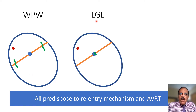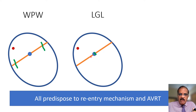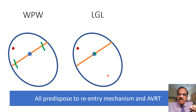In Lown-Ganong-Levine syndrome there is no external anomalous pathway, but there is an anomalous pathway within the AV node. The current does not have to pass through the special holding circuit; it can just trickle down through this bundle and get into the ventricle relatively quickly.